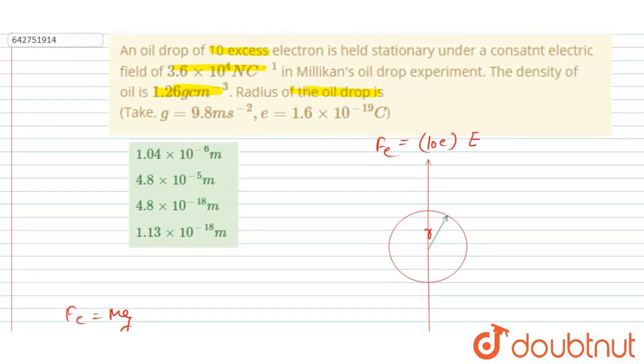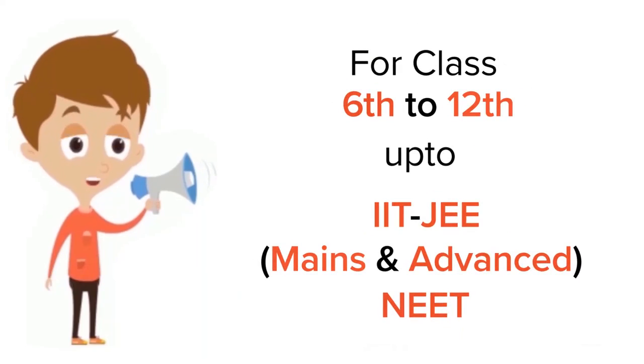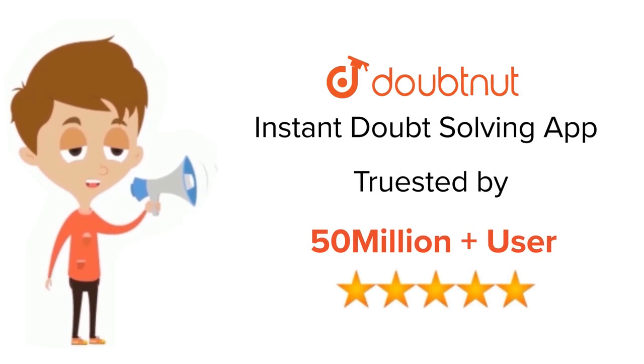Now you could see here the correct option will be 1.04 × 10⁻⁶, which is option A. So A will be the correct option. Thank you.